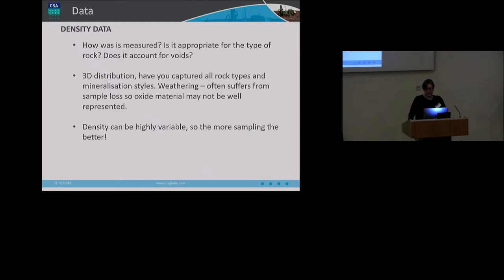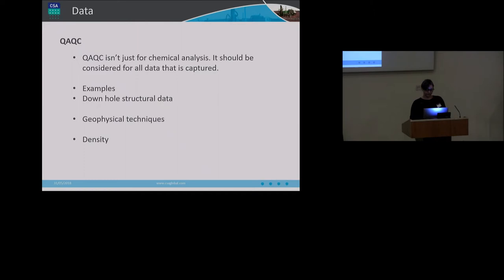I find that density is often overlooked, especially for early stage projects. To really add value, one should consider how the different rock types and mineralisation styles could affect density, and ensure that appropriate measurements are collected for all important data sets. You should consider collecting data for each rock type, mineralisation style and weathering phase, including waste. And often oxide materials are underrepresented, as it's poorly consolidated and difficult to sample.